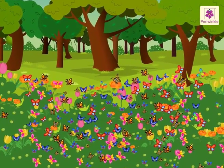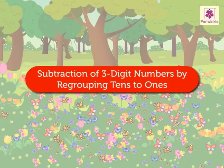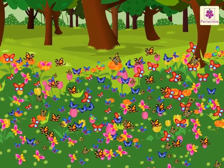Today, we are going to learn subtraction of three-digit numbers by regrouping tens to ones in this beautiful forest. Look at the colourful butterflies on the flowers.